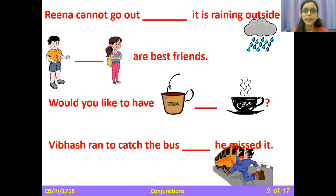Look at the first one, Rina cannot go out - it is raining outside. So you can see these two elements, they can stand alone as separate sentences. Now I have to join them. Rina cannot go out as it is raining outside. So the reason is given using the word as. So as is joining these two sets of sentences and making them one.